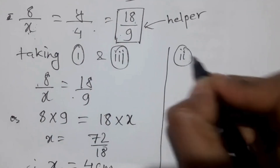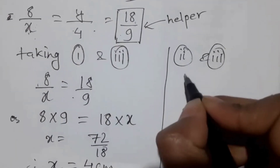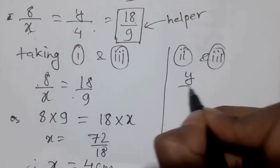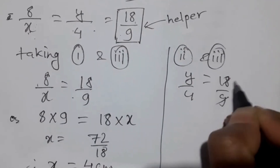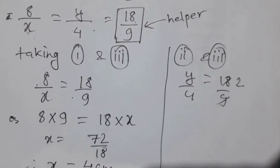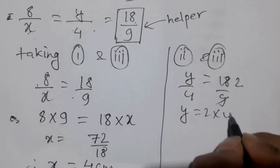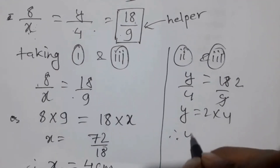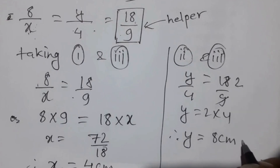Take ratio 2 and 3. Again, Y by 4 equals 18 by 9. So 9 times 2 equals Y times 9. Y is equal to 2 into 4. Therefore Y is equal to 8 cm.